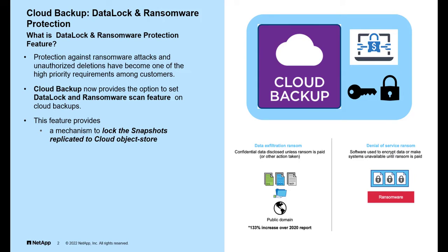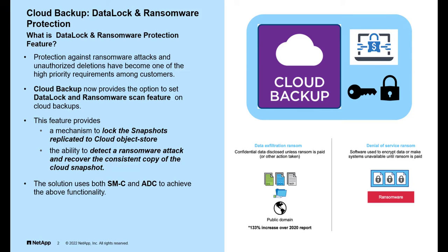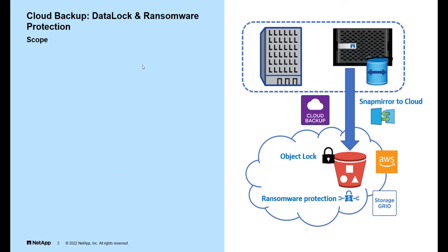This feature provides a mechanism to lock snapshots replicated to the cloud object store, the ability to detect ransomware attacks, and recover a consistent copy of the cloud snapshot. The solution uses both SnapMirror to Cloud and Active Data Connector technology to achieve the above functionality. Currently, the feature is supported only for StorageGRID and AWS.